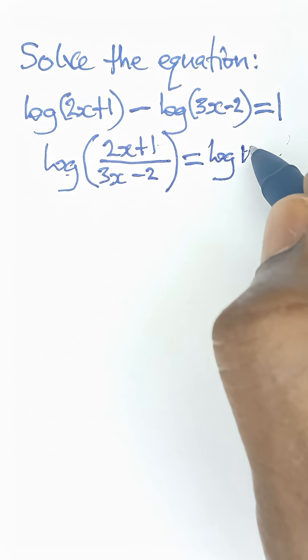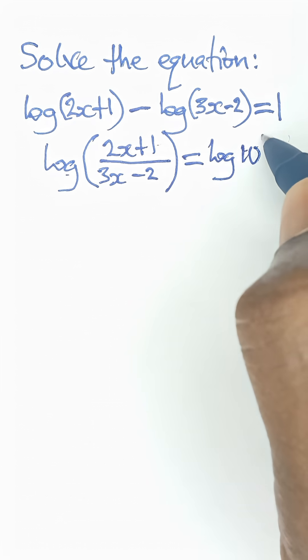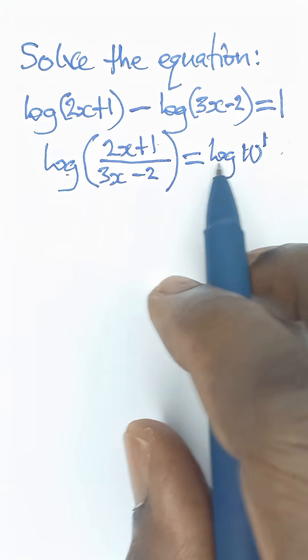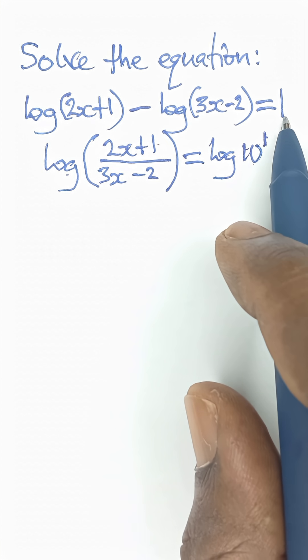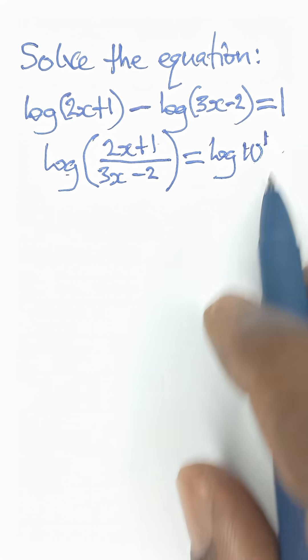So it has to be log 10 raised to the power 1. So you take the base of the log, which is 10, and then you raise it to the power of the value that you have there, which is 1.